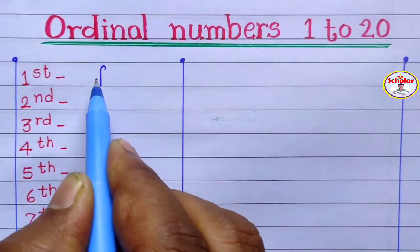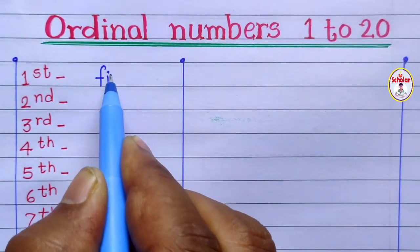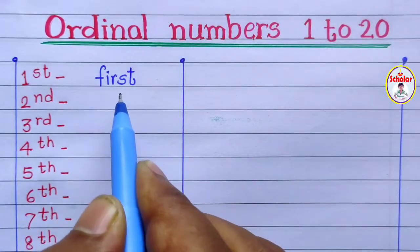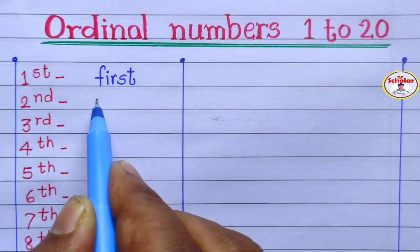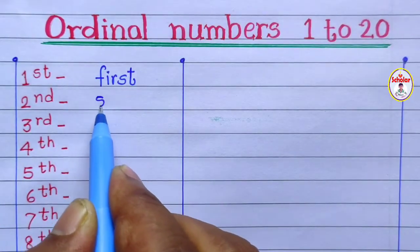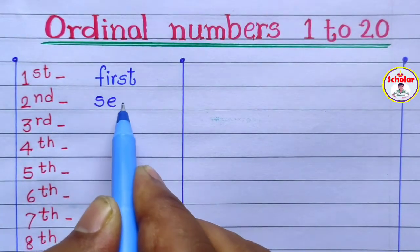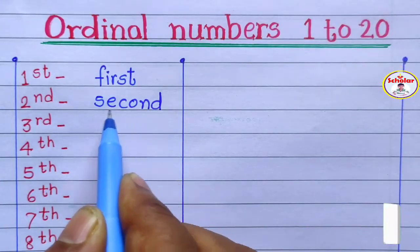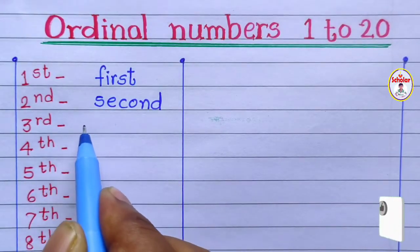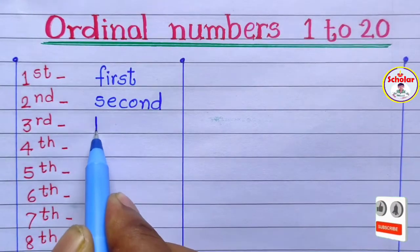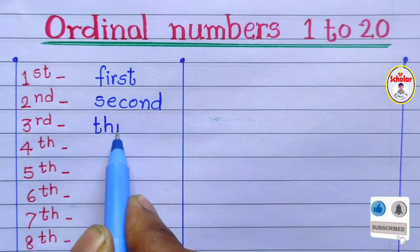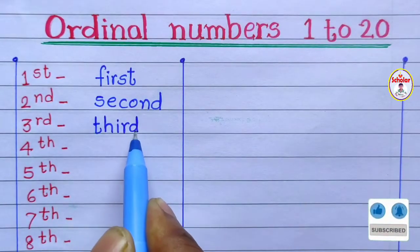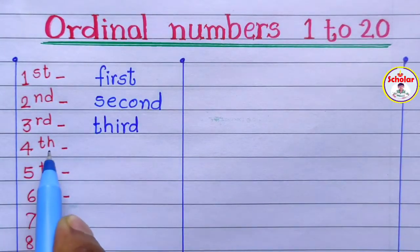Let's start. First, f-i-r-s-t. First. Second, s-e-c-o-n-d. Second. Third, t-h-i-r-d. Third.